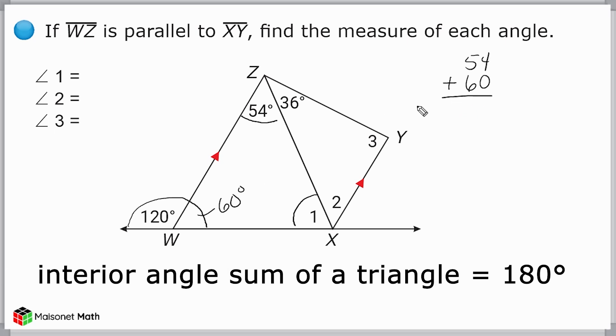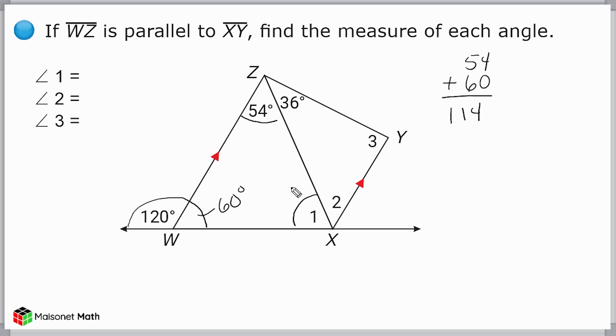So together, those two angles are 114 degrees, which means this third one must be 66 degrees, because 66 and 114 make 180 degrees.